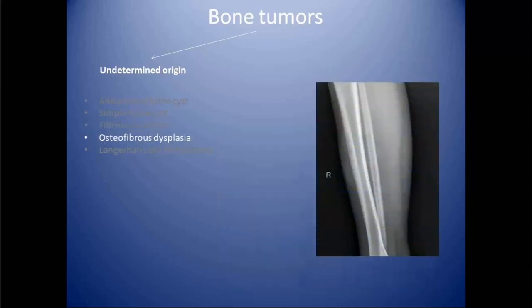Next is osteofibrous dysplasia, which is a rare benign fibroosseous cortical lesion almost exclusively seen in the tibia cortex. This condition is mainly seen in patients less than 10 years of age, and patients generally present with a lytic lesion in the cortex.